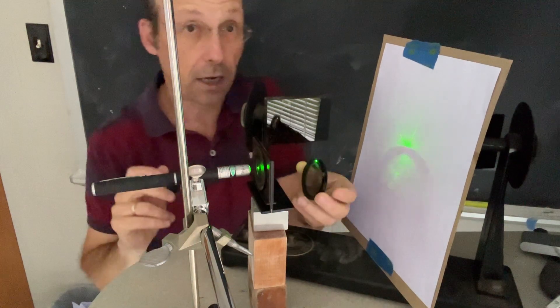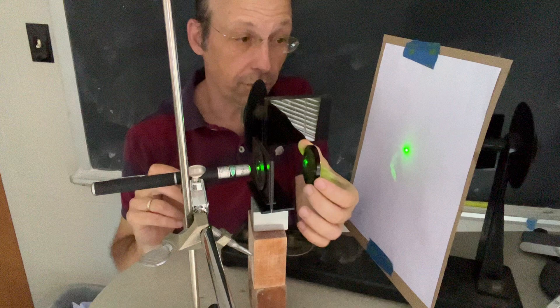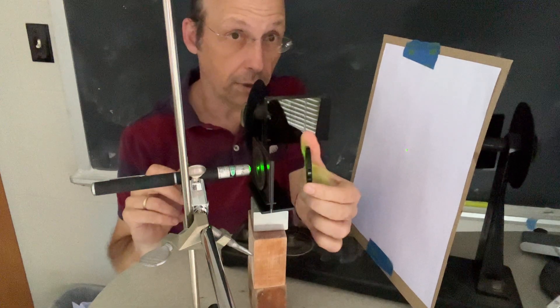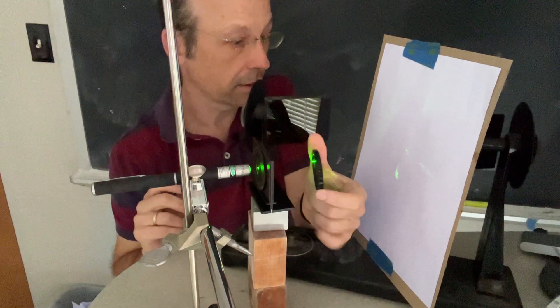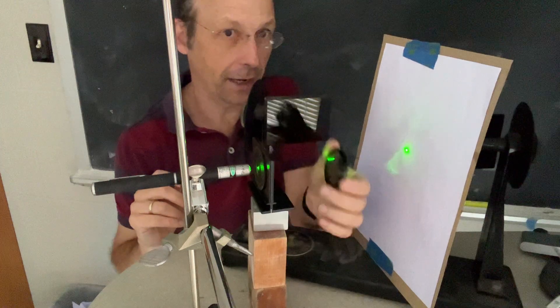I'm going to take my second polarizer, I'm going to put it right here and then I can rotate that until the dot goes away or almost away. I can get it all the way if I block with my hand but I don't do that.